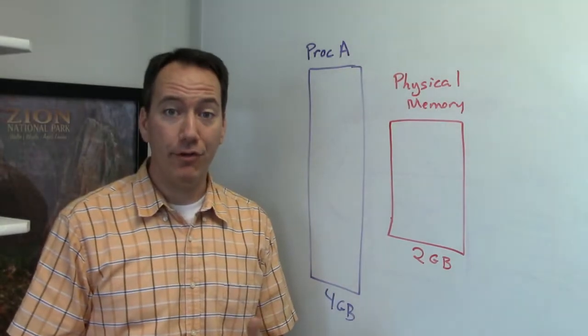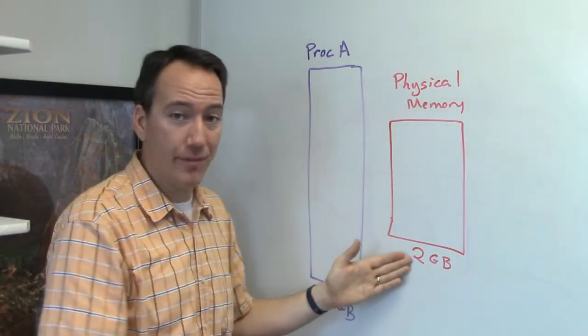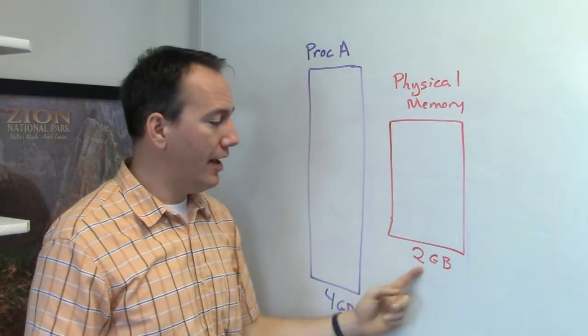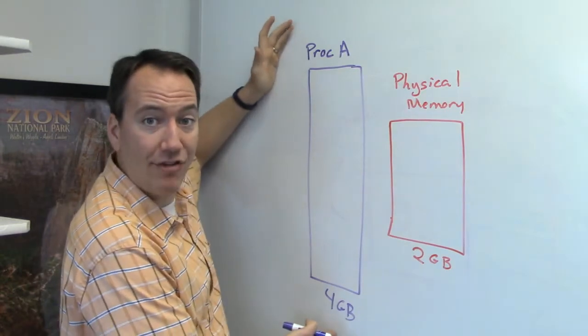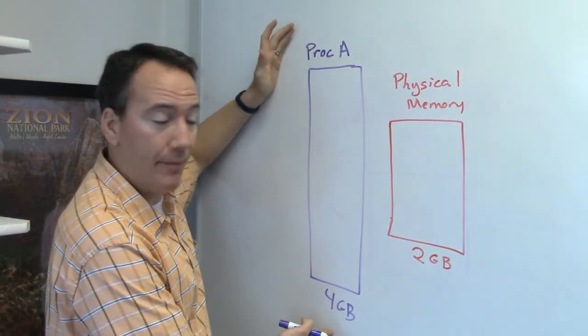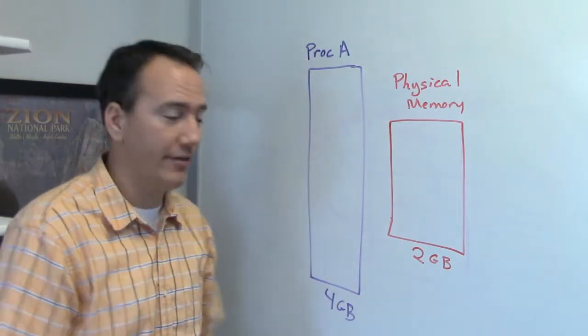Now one of the neat things about virtual memory is it allows us to extend the size of our actual physical memory. So for example, on this computer, I have two gigabytes of physical memory, but I can go ahead and let a program think that it actually has four gigabytes of available memory. This is called virtual memory because it doesn't actually exist physically on the hardware.